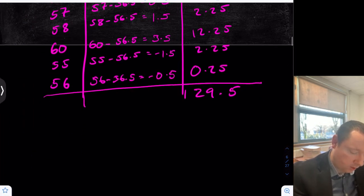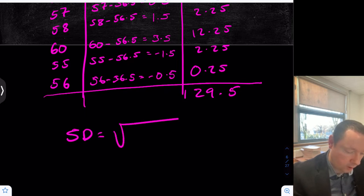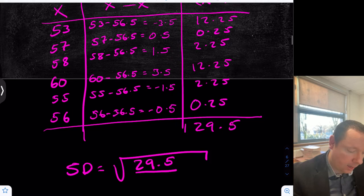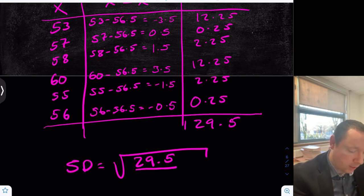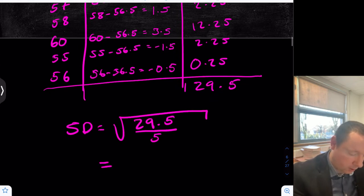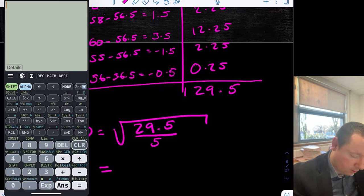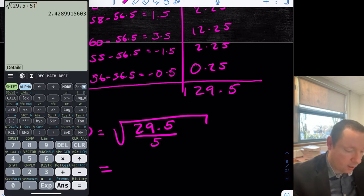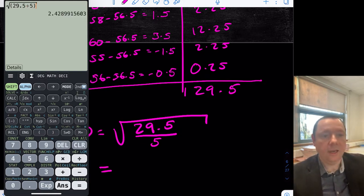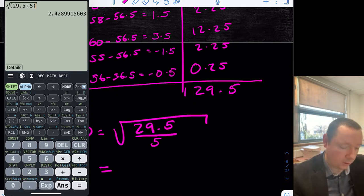That means our standard deviation equals the square root of 29.5 all divided by n minus 1 — that's one less than the number of numbers we started with, so we had 6, so divide by 5. This is a calculator job. Square root, open brackets, 29.5 divided by 5, close brackets — gives 2.429, or 2.4 to 1 decimal place.